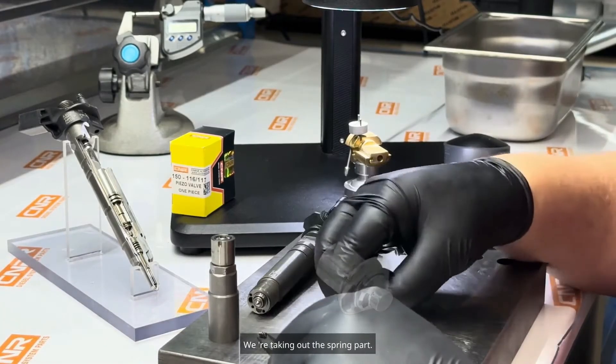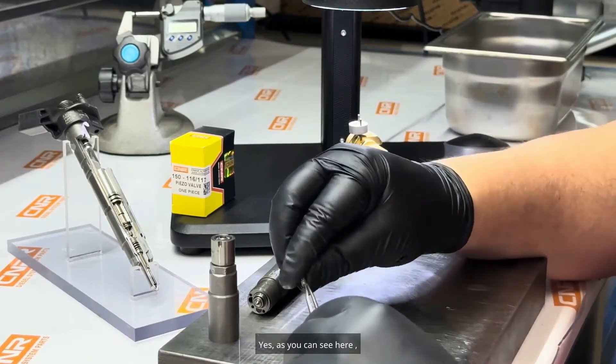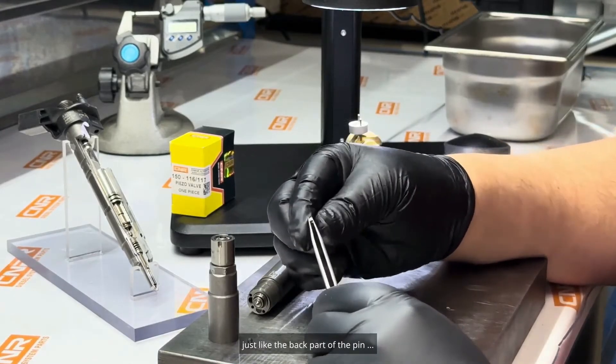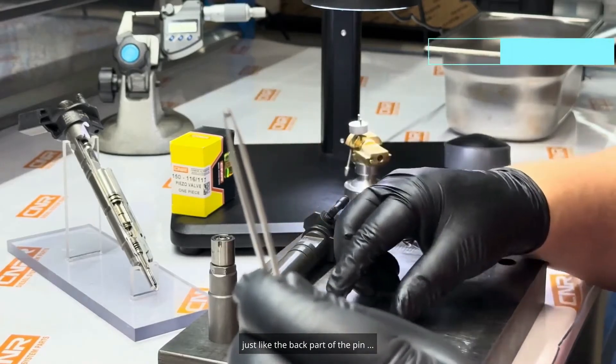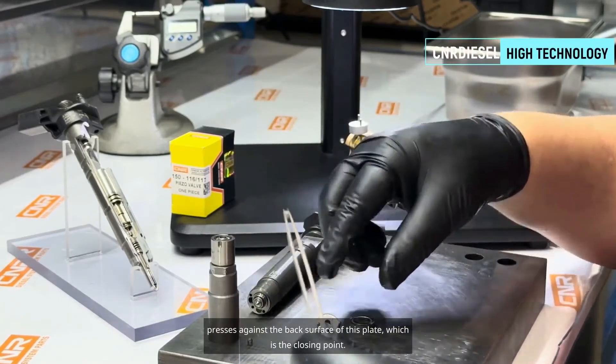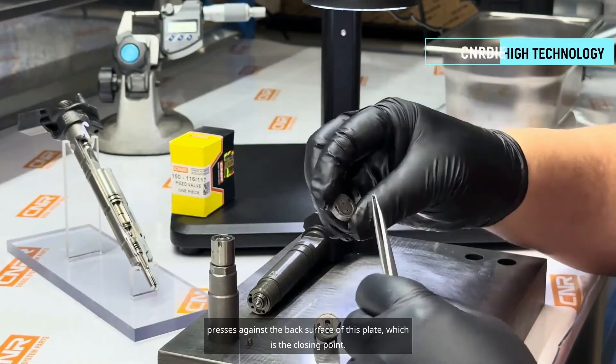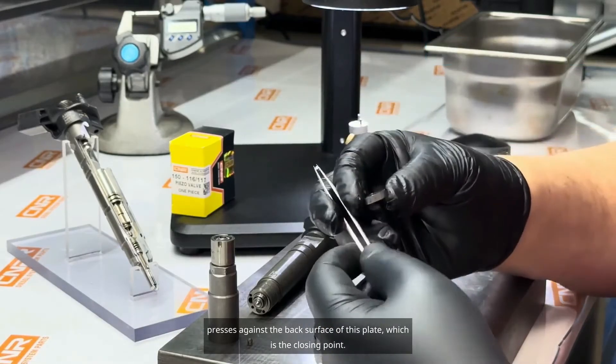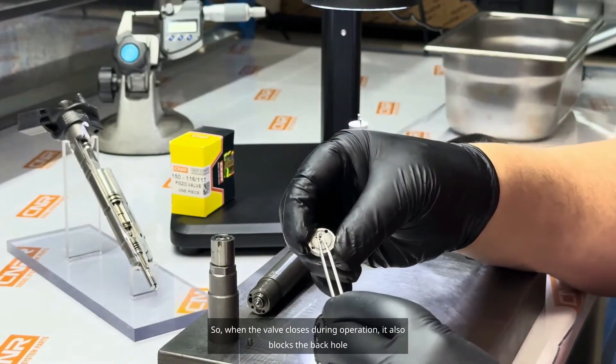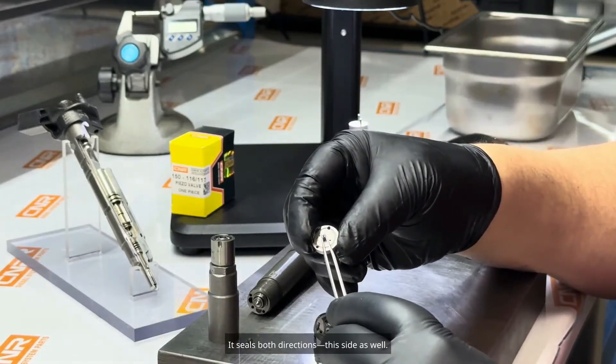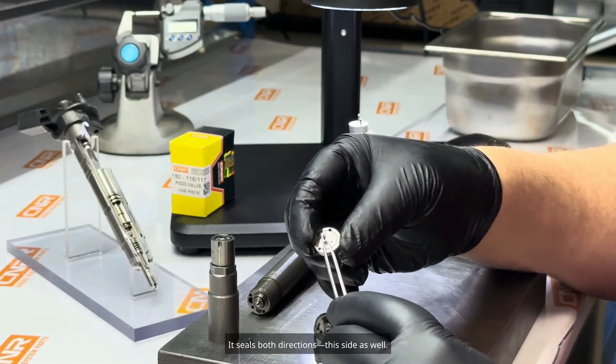When we turn the pin to the other backside, we remove the spring. As you can see here, just like the back part of the pin, it presses against the back surface of this plate, which is the closing point. So, when the valve closes during operation, it also blocks the back hole. It seals both directions.